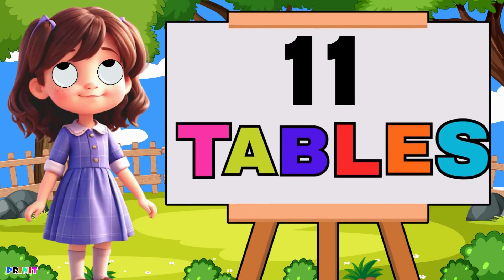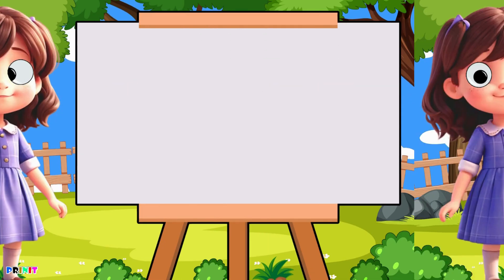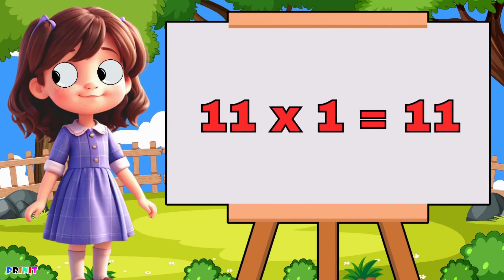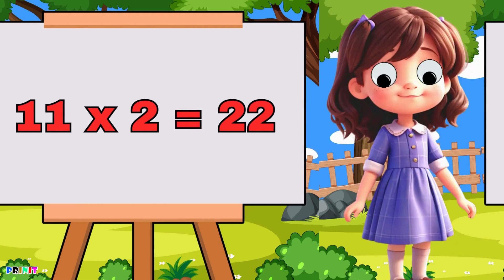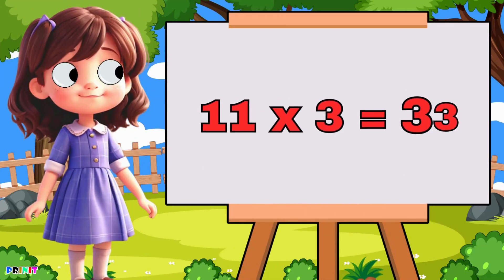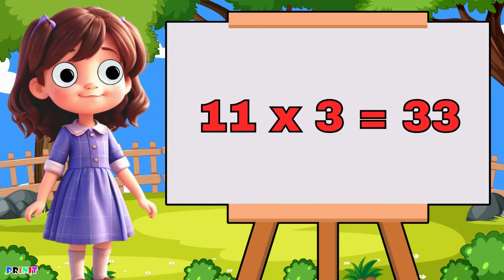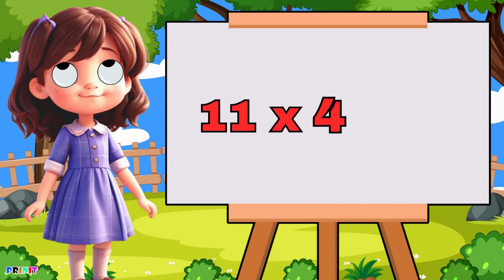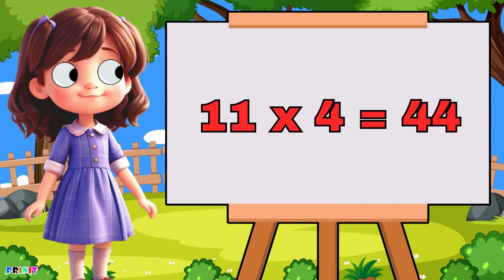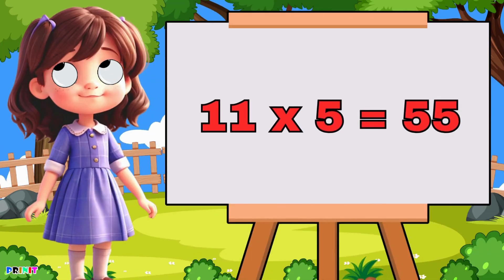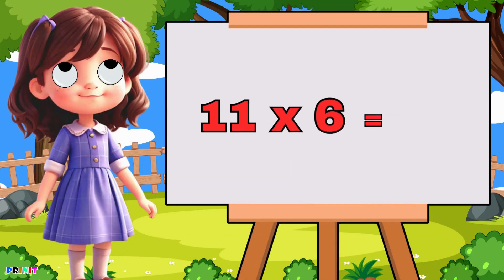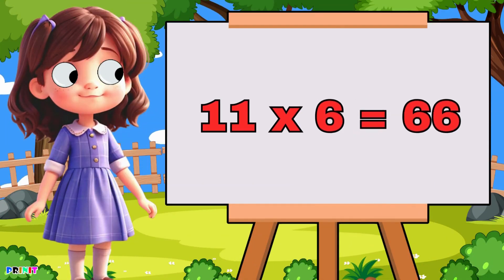Eleven tables. Eleven ones are eleven, eleven two's are twenty-two, eleven three's are thirty-three, eleven four's are forty-four, eleven five's are fifty-five, eleven six's are sixty-six.